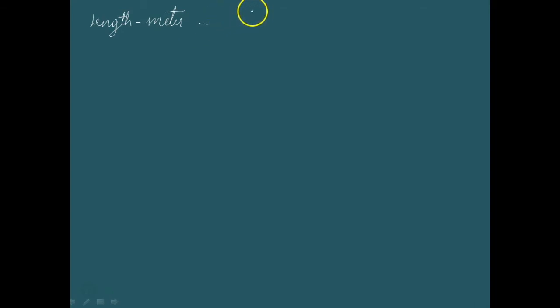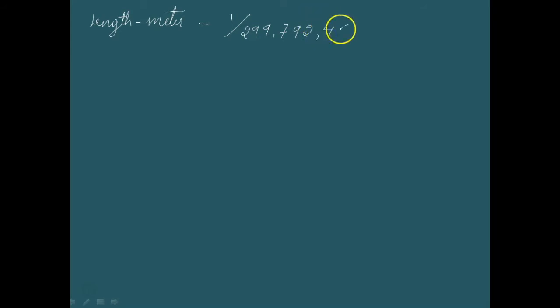The meter is the length of the path traveled by light in vacuum during a time interval of 1/299,792,458 of a second. So the length of the path traveled by light during a time interval of this much of a second is defined as 1 meter.